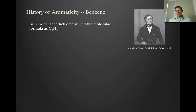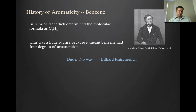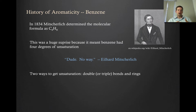This was actually a huge surprise, because what this meant was that benzene had four degrees of unsaturation. So let's remind ourselves how we get to degrees of unsaturation. There are essentially two ways: we can either have a double bond or a triple bond, or we can have a ring.